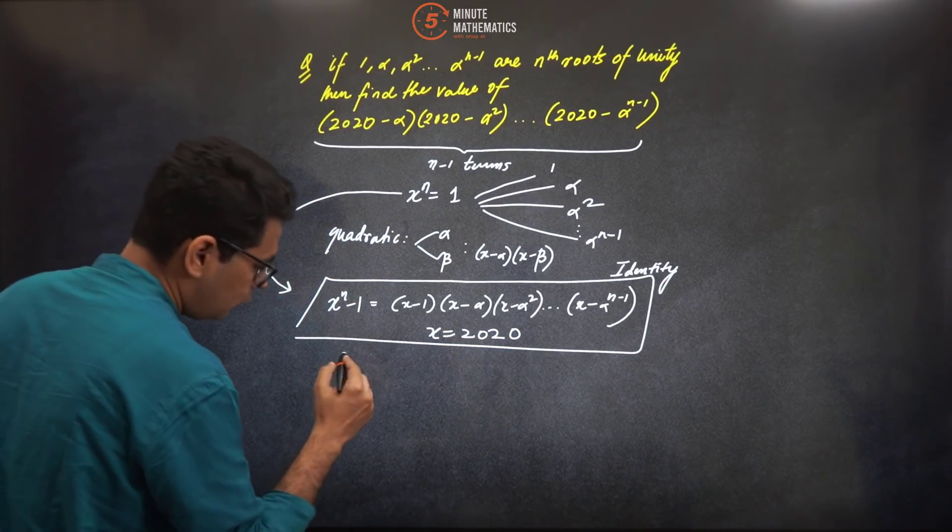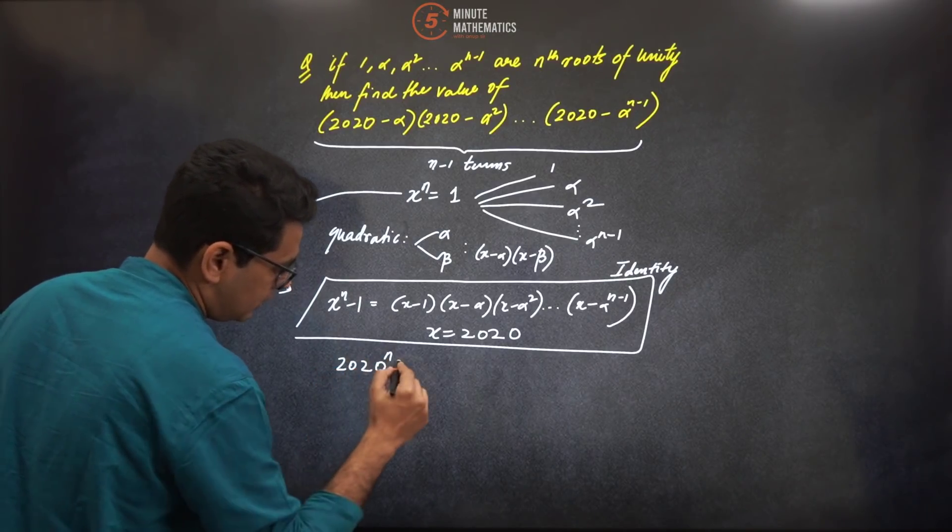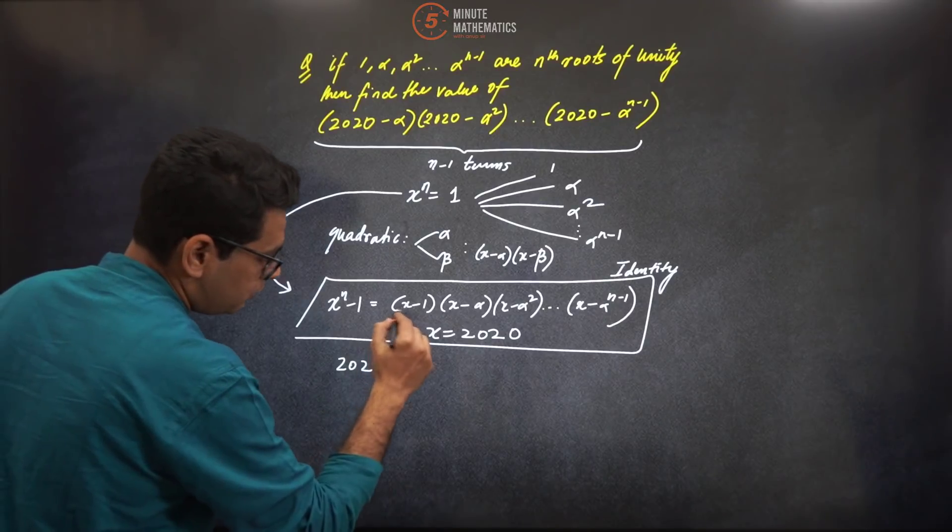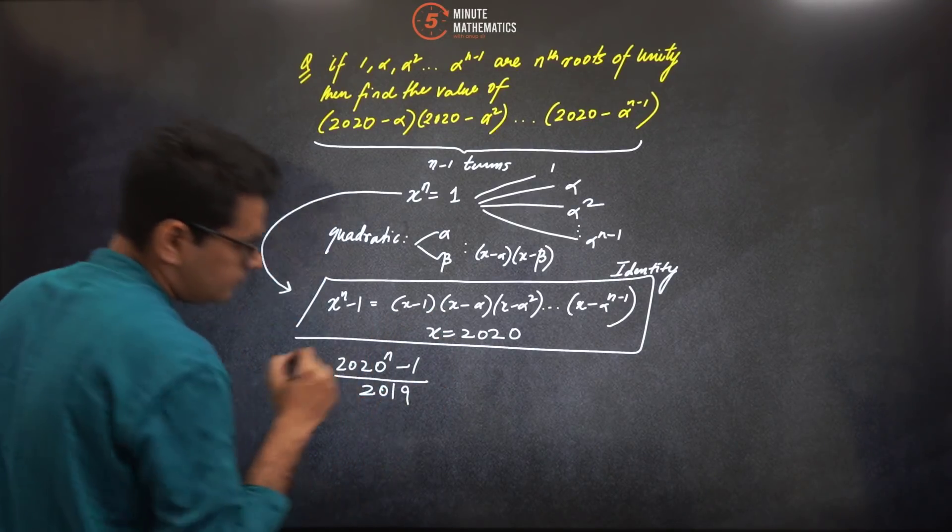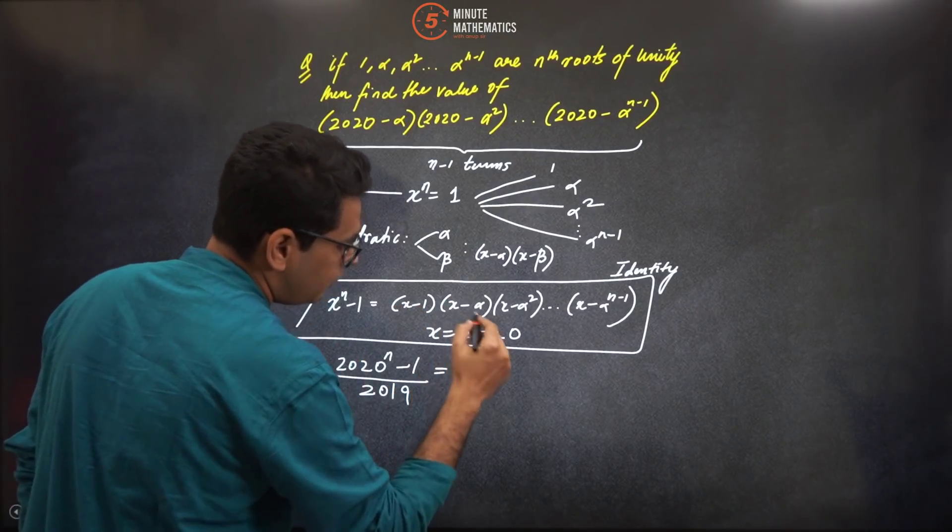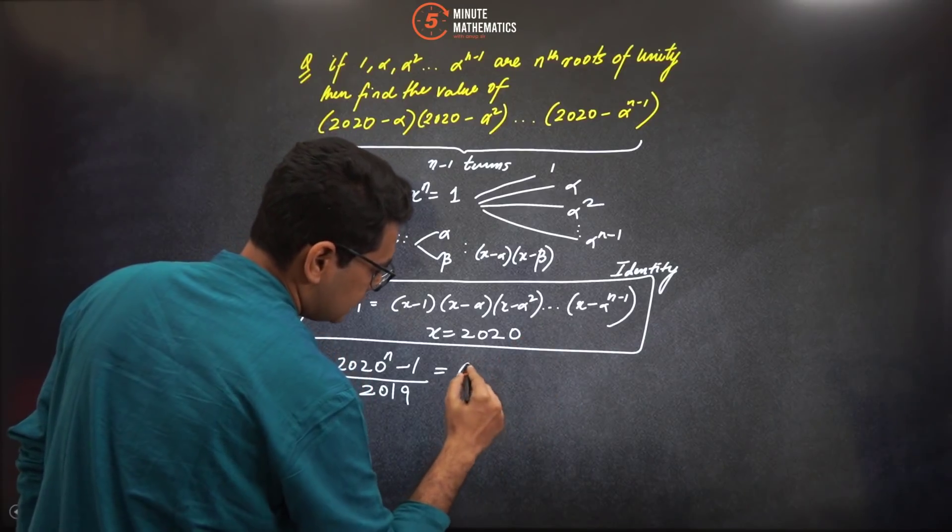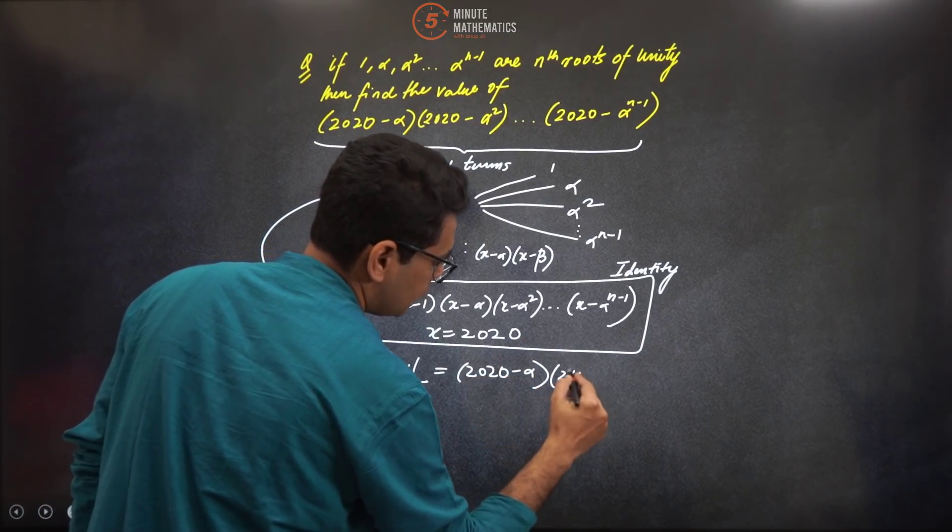So if I put x equal to 2020, since it is an identity it should be true for every value of x. Now you get to your answer. It should be 2020 raised to power n minus one. This value would be what? 2019, right? I have just taken x minus one here. The leftover thing you have is the quantity which you were actually looking to find. Look, answer has come!